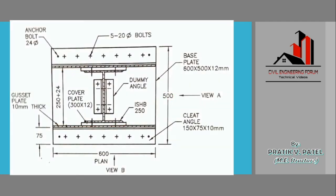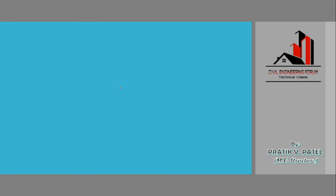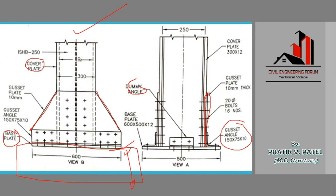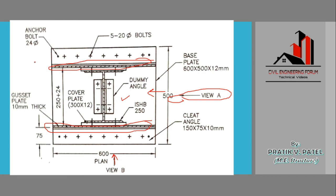The components of gazetted base foundation are: column — Universal Standard High Beam 250, which is 54 kg per meter. Then a cover plate of 300 x 12 mm thickness, which is shown here. The cover plate is connected between the column and the gazette plate — it is essentially a packing plate between the gazette plate and the I-section column.